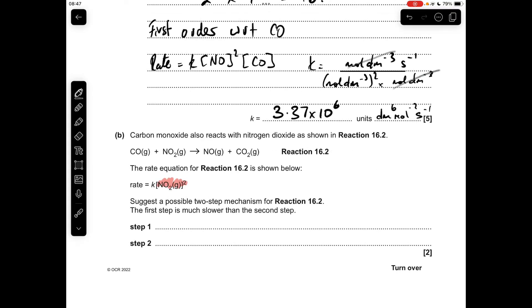And moving on to part B, so we've got to come up with a possible two-step mechanism for this reaction. Now, there's loads of different ways you can do this, but they all must start with 2 moles of NO2 as reactants in step 1. Told that the first step is much slower than the second step, so that's your rate determining step. And you can see I've highlighted the rate equation because that's telling us that 2, second order, 2 moles of NO2 react.